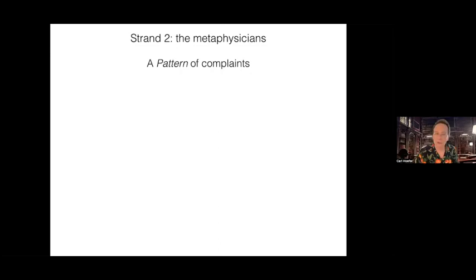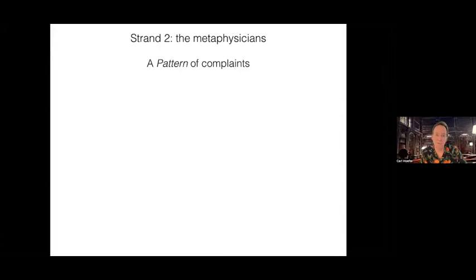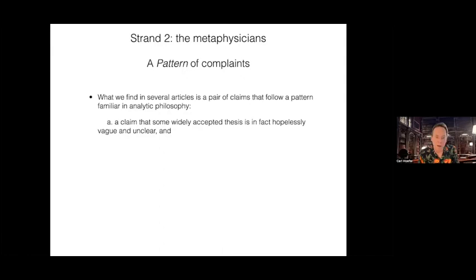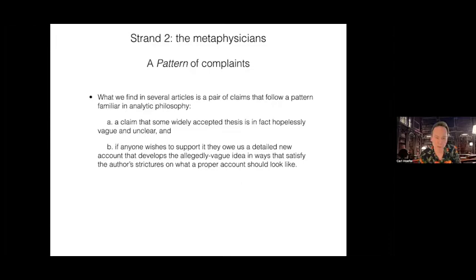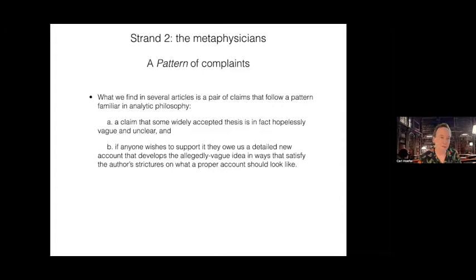I'm going to give you several tastes of what we find in the recent metaphysics literature. I want to point out there's a typical pattern in the complaints made about sophisticated substantivalism, especially the HPB variety. The pattern goes: (a) the author makes a claim that some widely accepted thesis is hopelessly vague and unclear, and then (b) says if anyone wishes to support it, they owe us a detailed new account that develops the allegedly vague ideas in ways that satisfy the author's strictures on what a proper account should look like. This is a pattern you can see in analytic philosophy quite frequently.